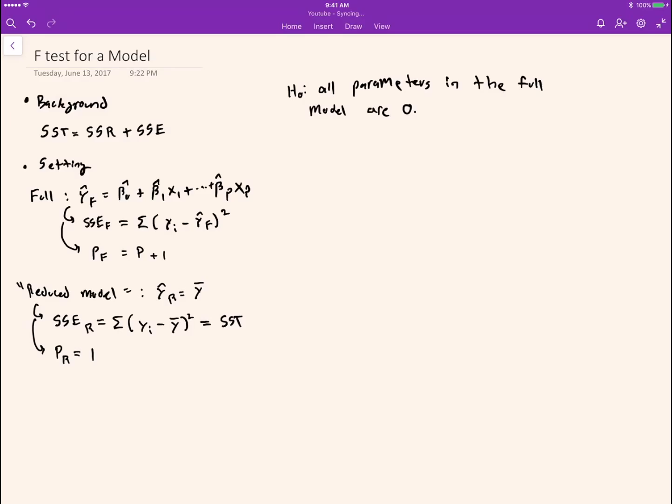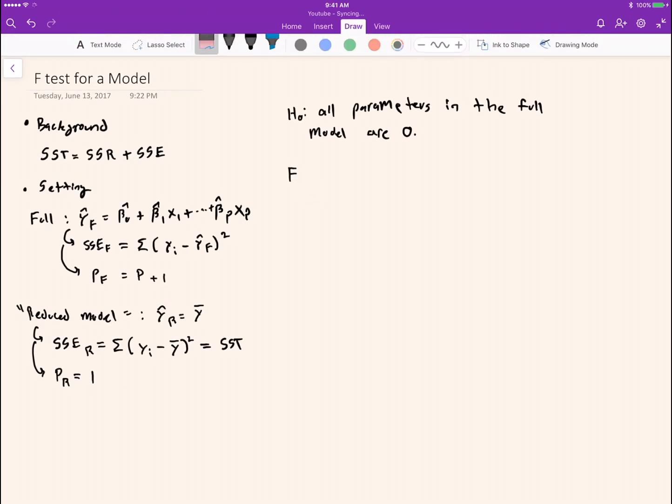To conduct this test we can compute an obtained F by comparing the sum of the squares error for the reduced model to the sum of the squares error for the full model per additional degree of freedom or per additional parameter.